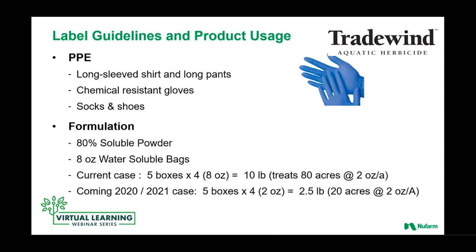That smaller pack size will really change the ability to go into smaller pond markets. Two of the most common weeds in smaller ponds are duckweed and watermeal. Duckweed is on the label as a foliar spray, but watermeal is also very sensitive to submersed application rates. So even going into these ponds with submersed applications, you can control some of the more common surface weeds — that's something to keep in mind with Tradewind.